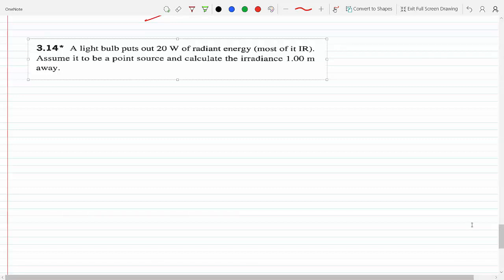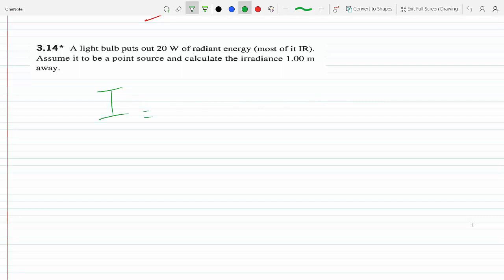Now they call it radiance. As we know, intensity is watts over meter squared, so I equals power over area. If you are radiating 1 meter away, you are radiating in a sphere.